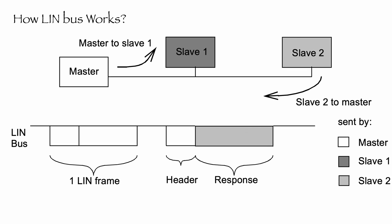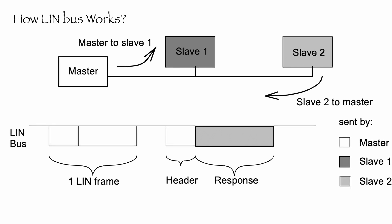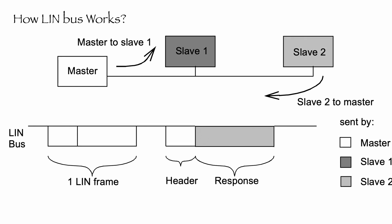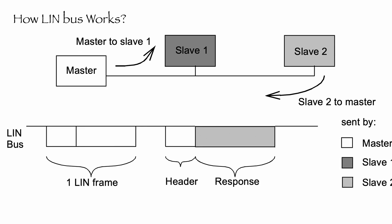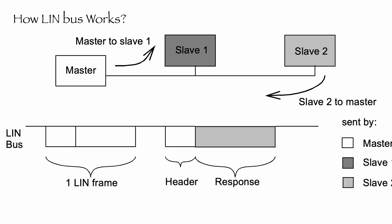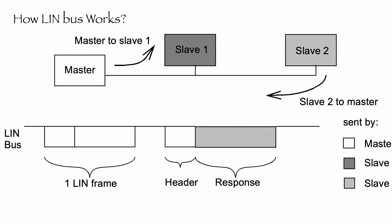To better understand this functionality, let's look at how LIN Bus works. At its core, it is relatively simple: a master node loops through each of the slave nodes, sending a request for information, and each slave responds with data when polled. However, with each specification update, new features have been added to the LIN specification, making it more complex.